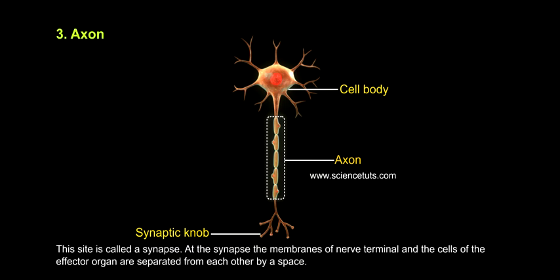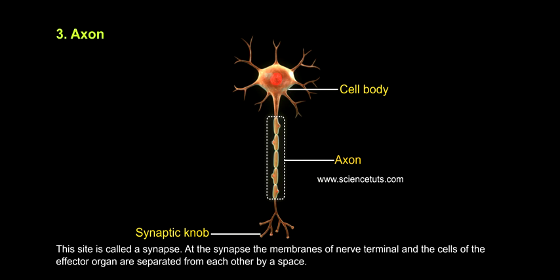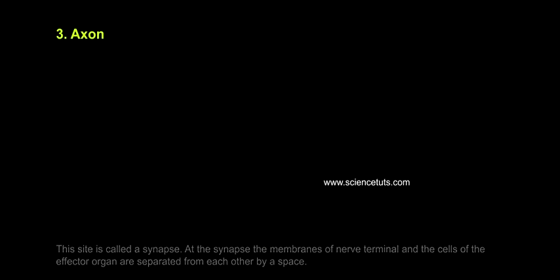This site is called a synapse. At the synapse, the membranes of the nerve terminal and the cells of the effector organ are separated from each other by a space.